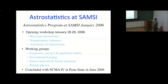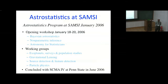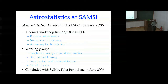Gravitational lensing was another working group, led by Arlie Peters, an applied mathematician. Source detection, feature detection, and particle physics was led by Louis Lyons. The program concluded with a transition workshop coinciding with Statistical Challenges in Modern Astronomy, fourth edition, at Penn State in 2006. Since 1991, we have been organizing Statistical Challenges in Modern Astronomy to bring statisticians and astronomers together. The first one was in 1991, with subsequent ones every five years.